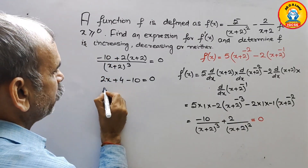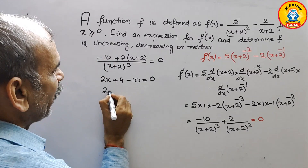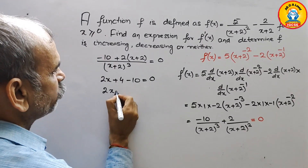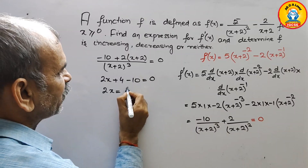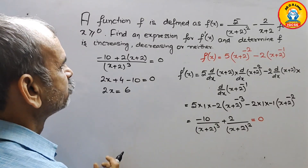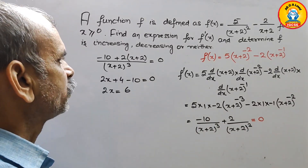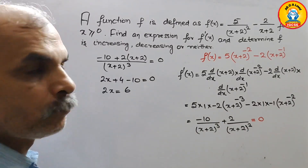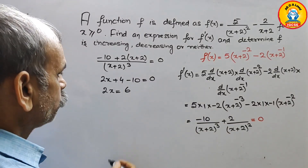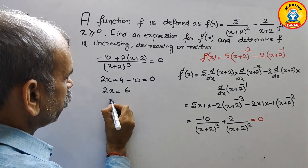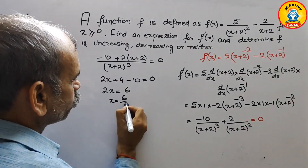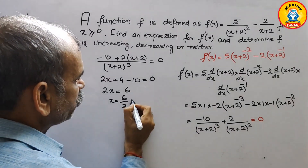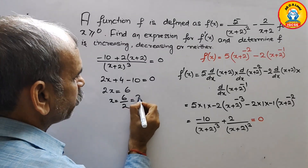So 2x equals 6, therefore x equals 6 divided by 2, which is equal to 3.